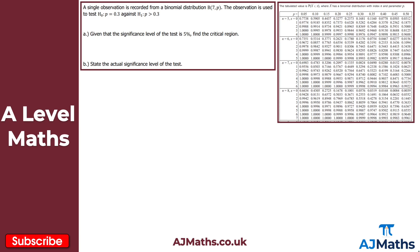Let's just consider a couple of definitions. A critical region is a region of the probability distribution where, if the test statistic falls within the critical region, this would mean we reject H0. Let's draw a number line here to illustrate this concept of the critical region.